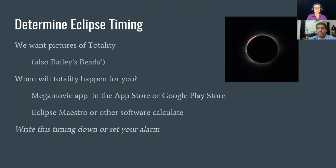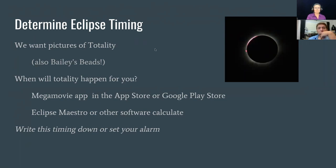Of course, if you've got Eclipse Maestro or any of those other software packages tethered to your computer, that will be easy to use as well. It can't hurt to write down the eclipse times because you may not have any signal wherever you happen to be. Set alarms for when totality is going to happen — five minutes before and one minute before is usually a good rule of thumb. The Mega Movie app does all of this because we made it to do that, and we'll have some of the makers of the app at the social on Saturday to answer questions.